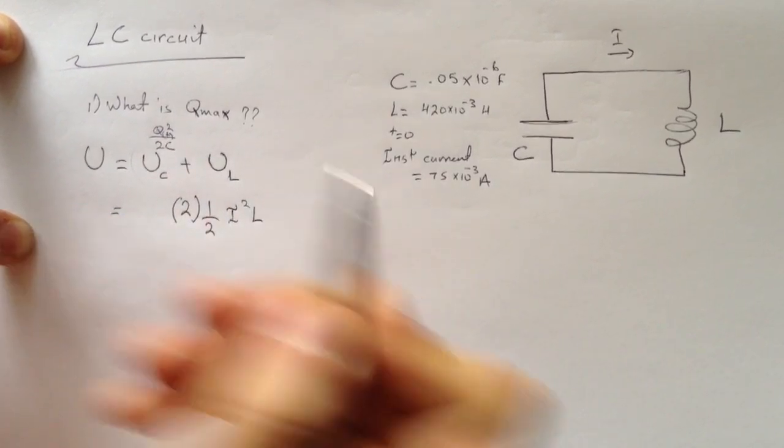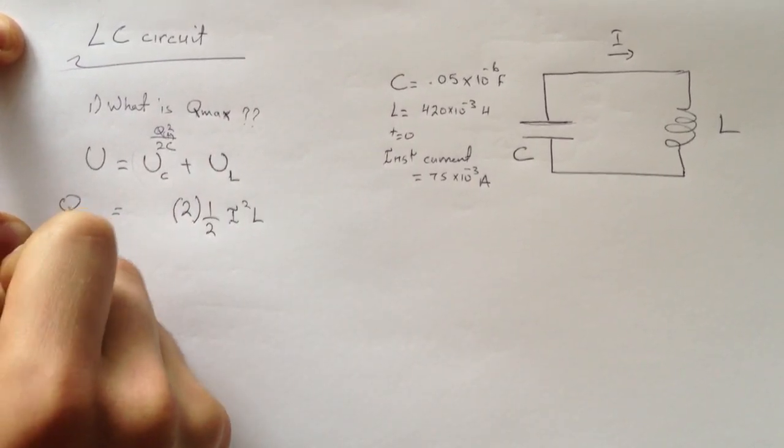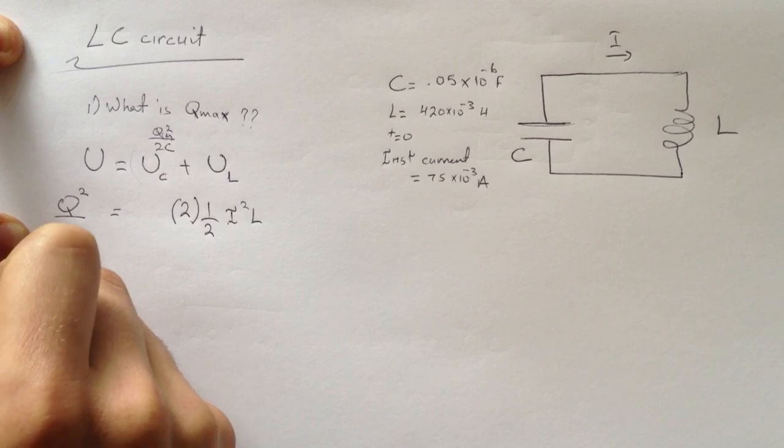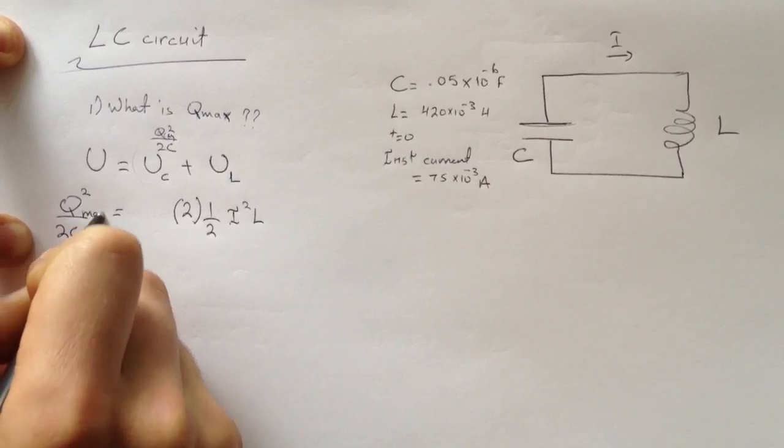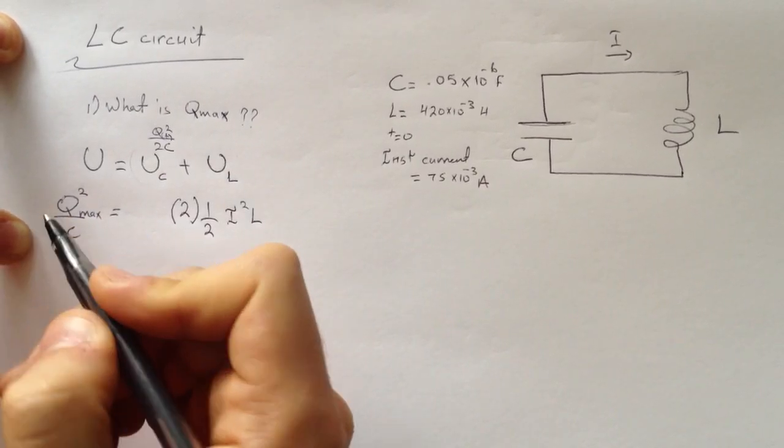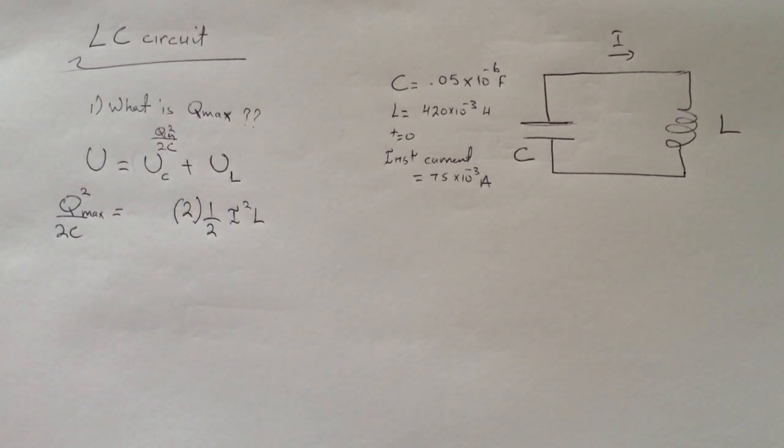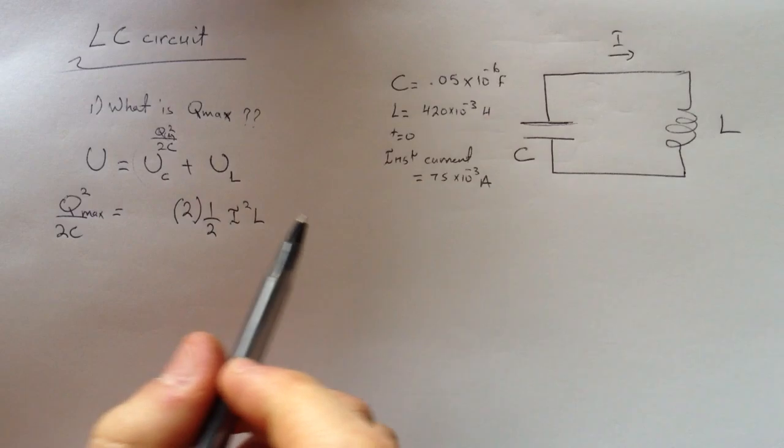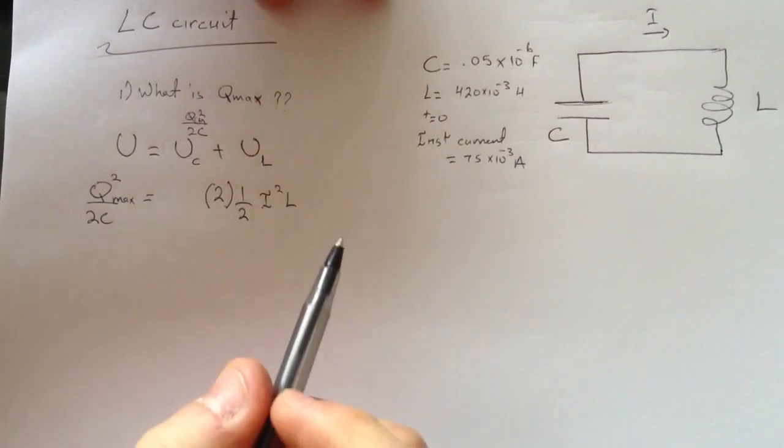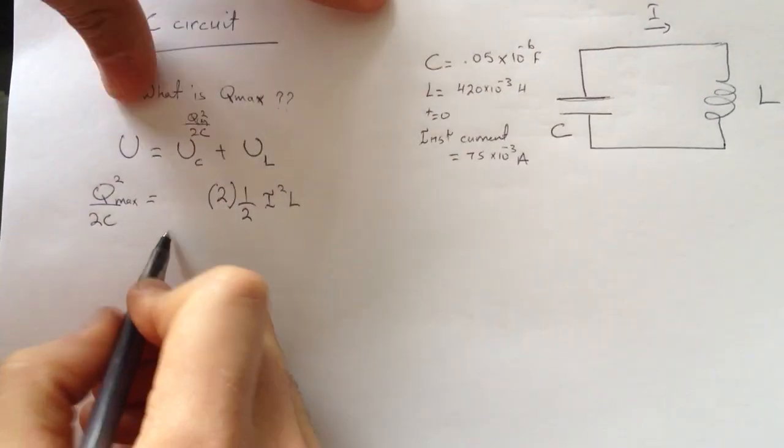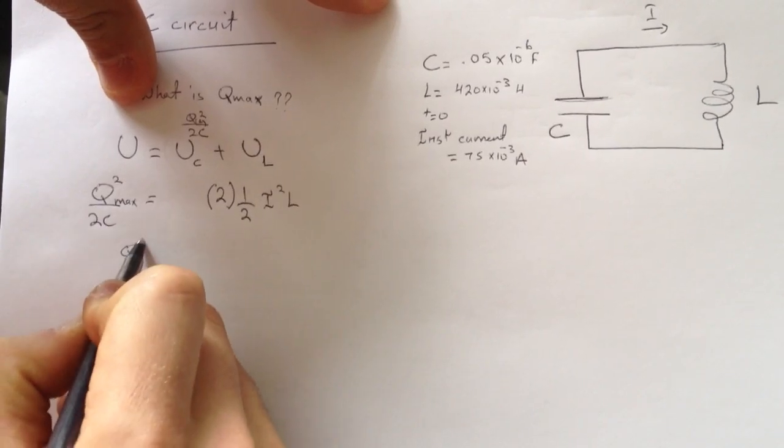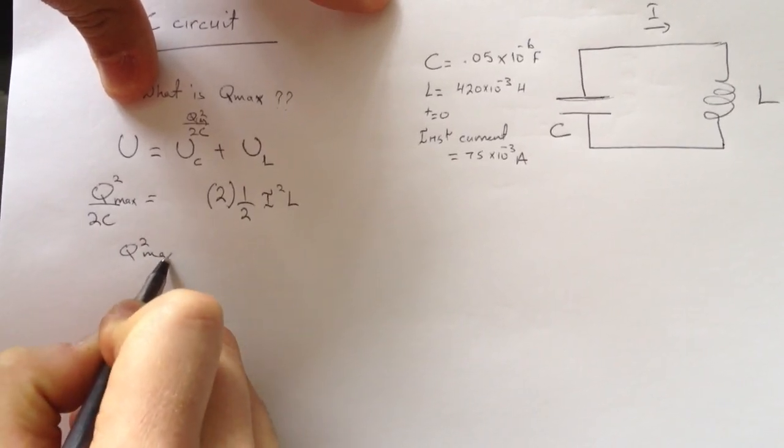And the maximum potential energy is Q squared over 2C, and this is max Q squared max. By the way, you can see the full question down in the description.